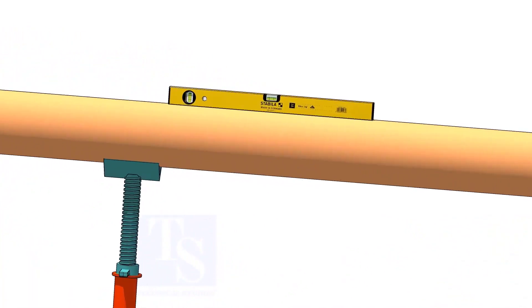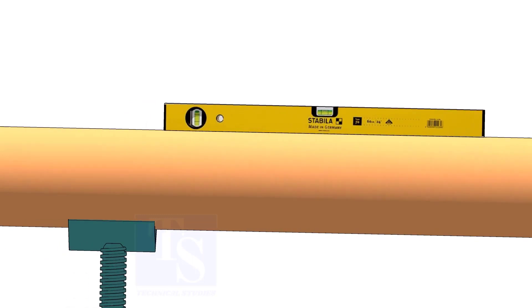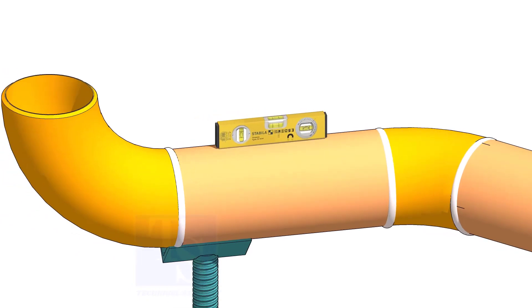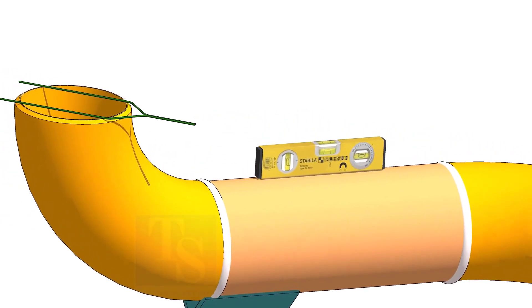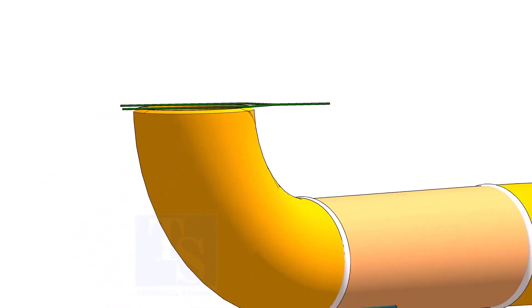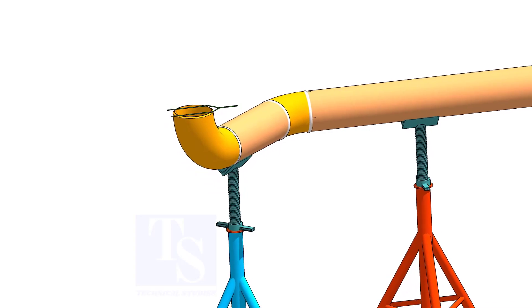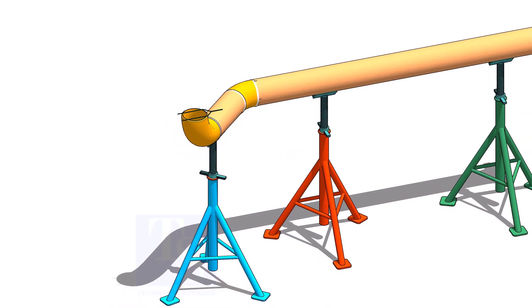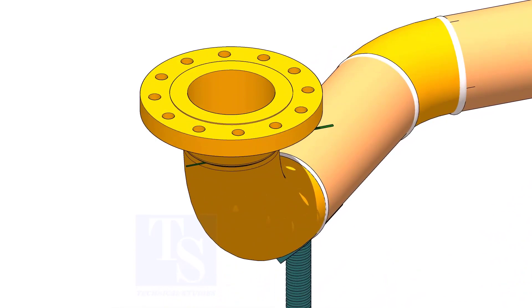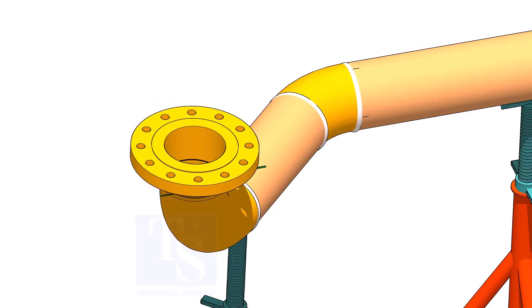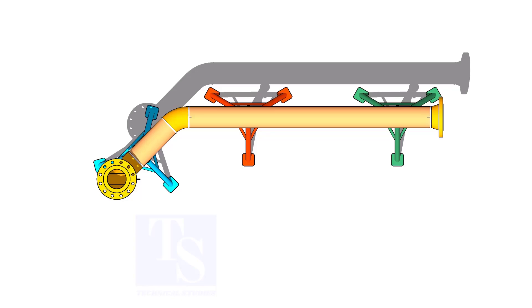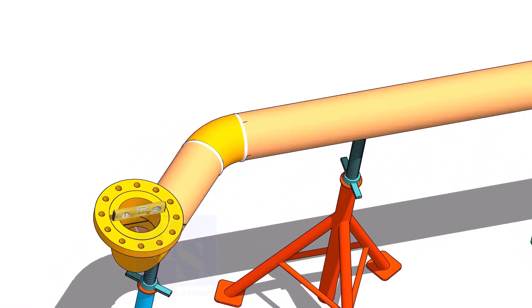Level the pipe as shown. Put the gap rod and the flange on the elbow face. Check the level of the flange.